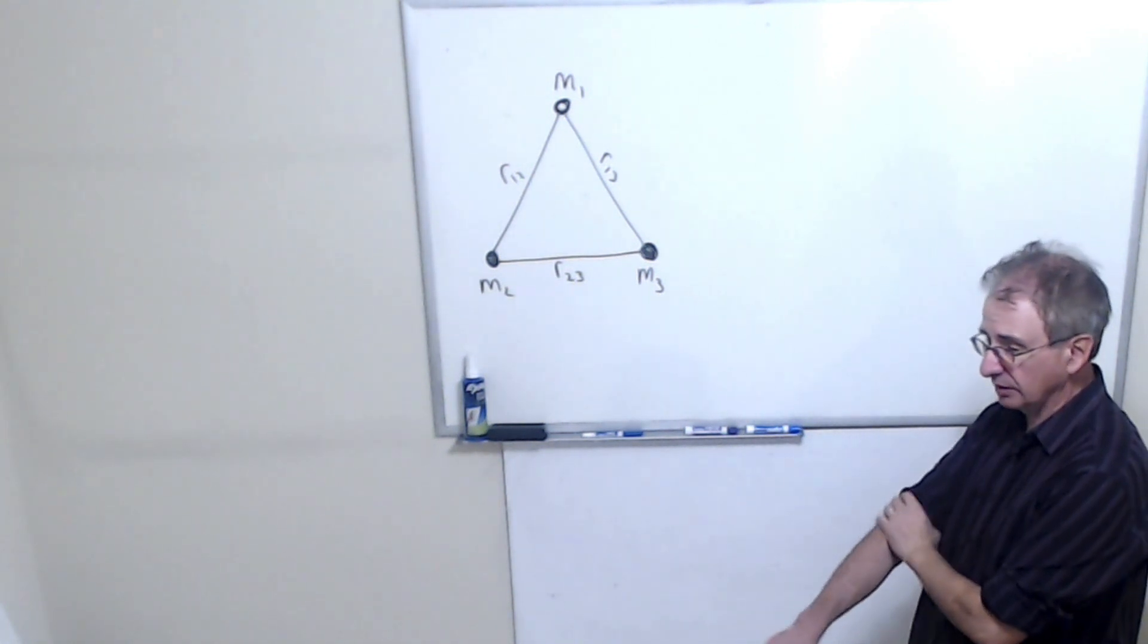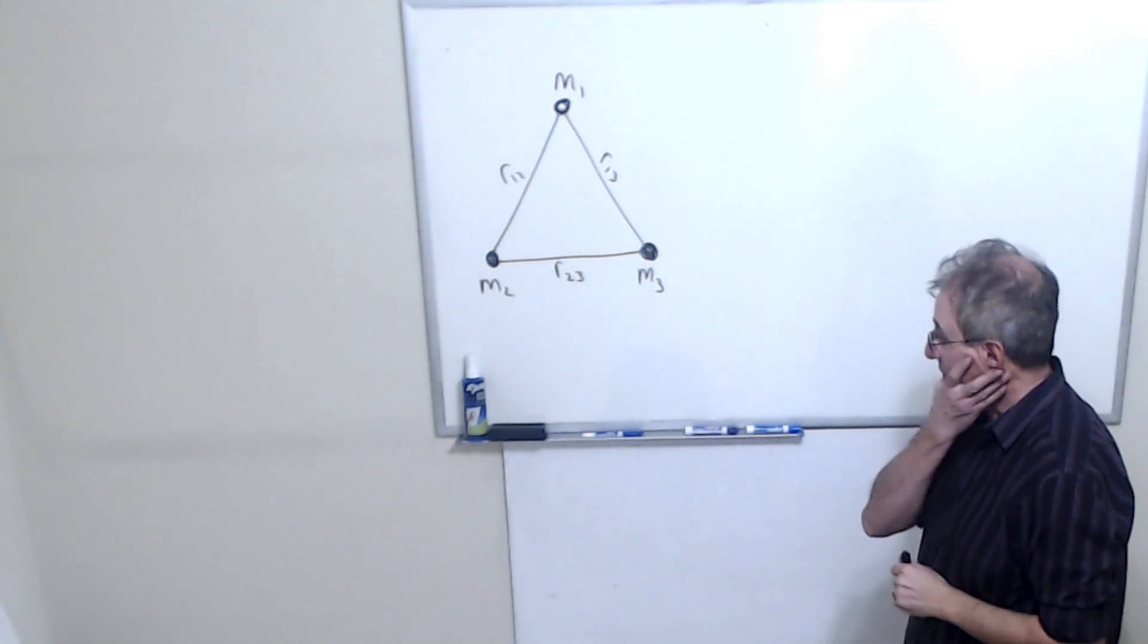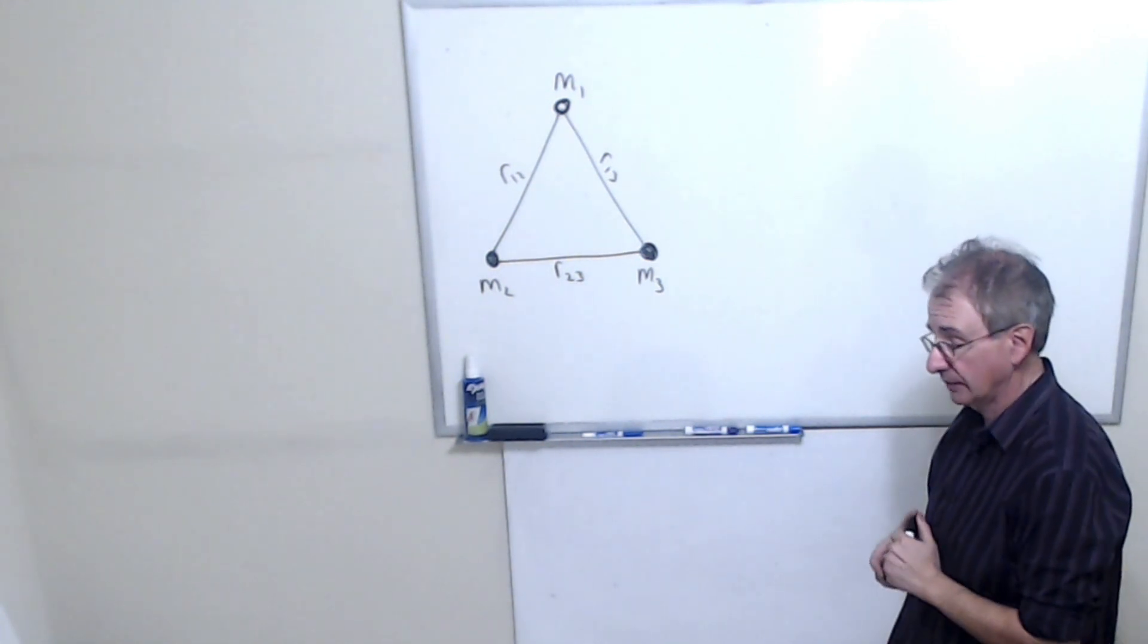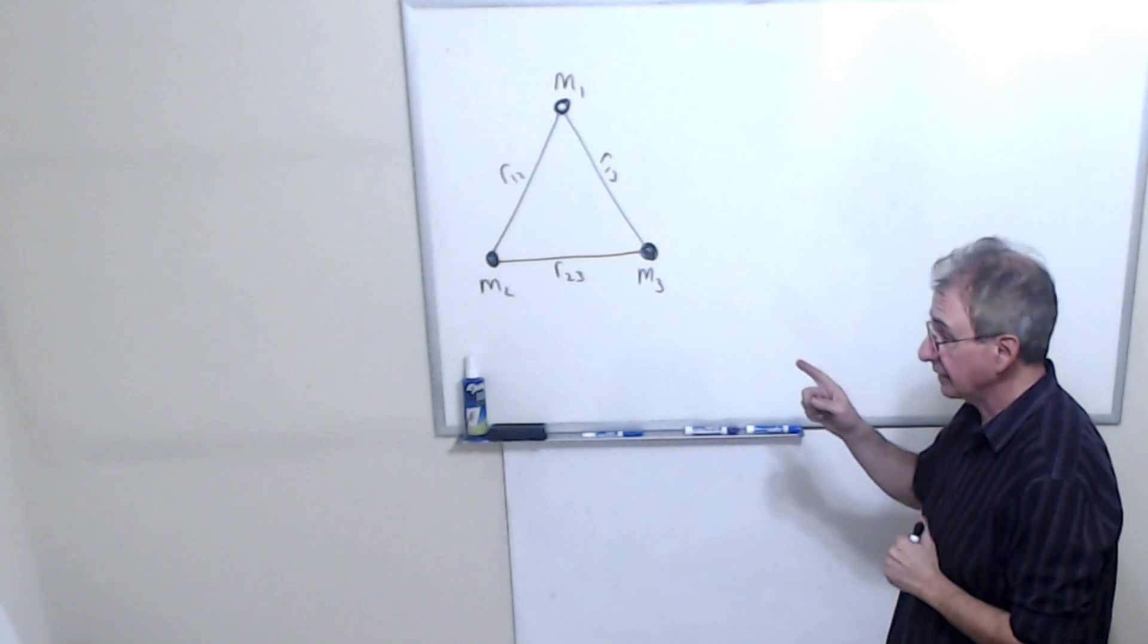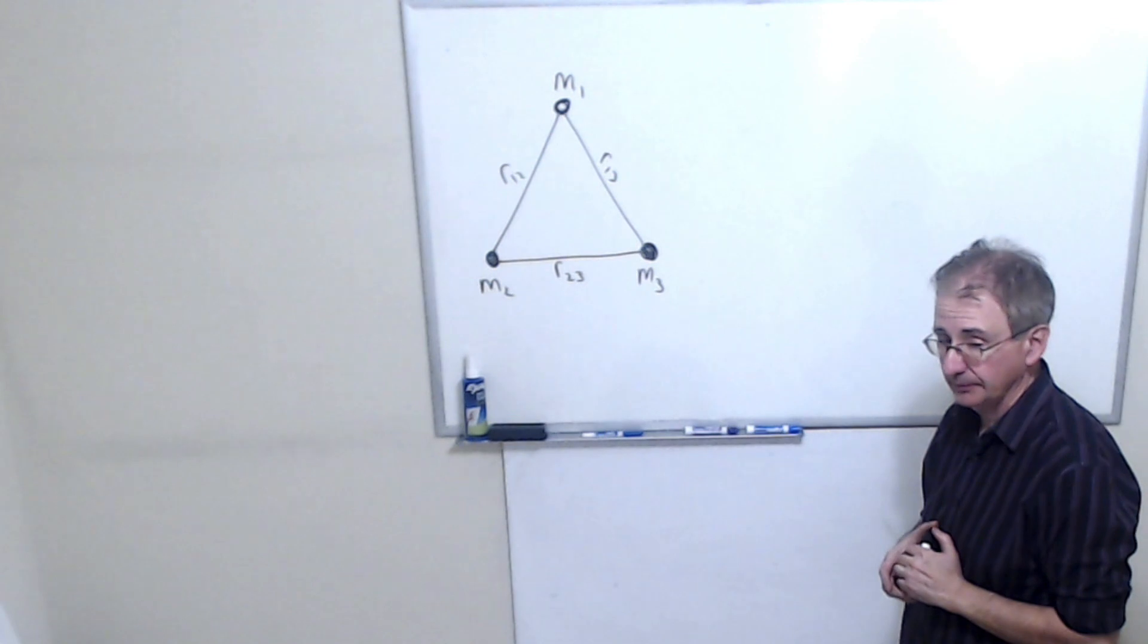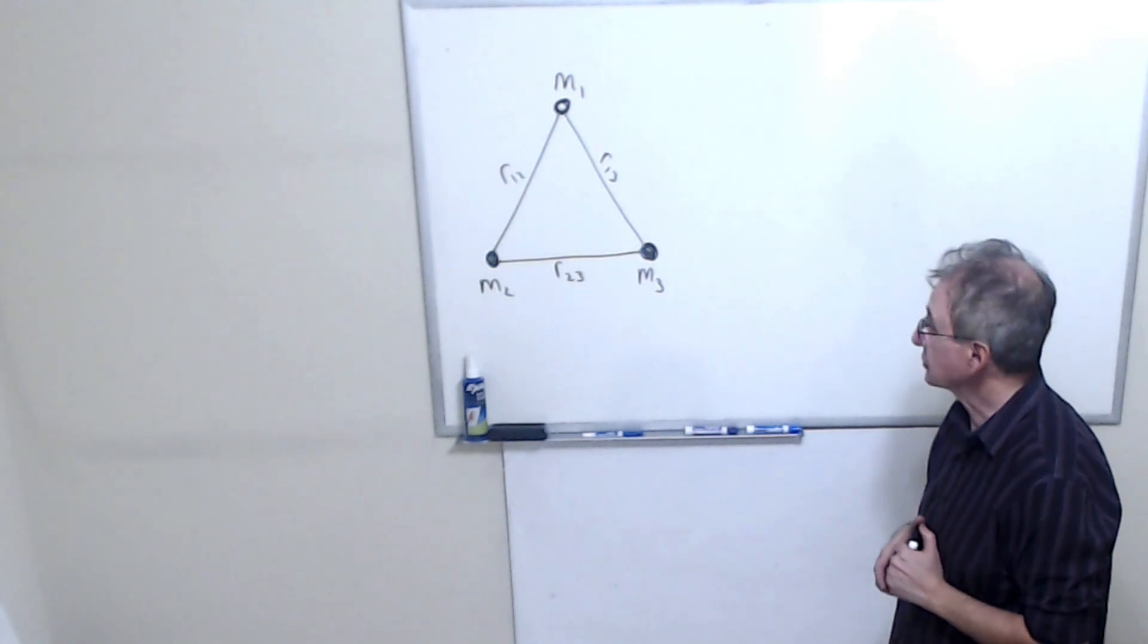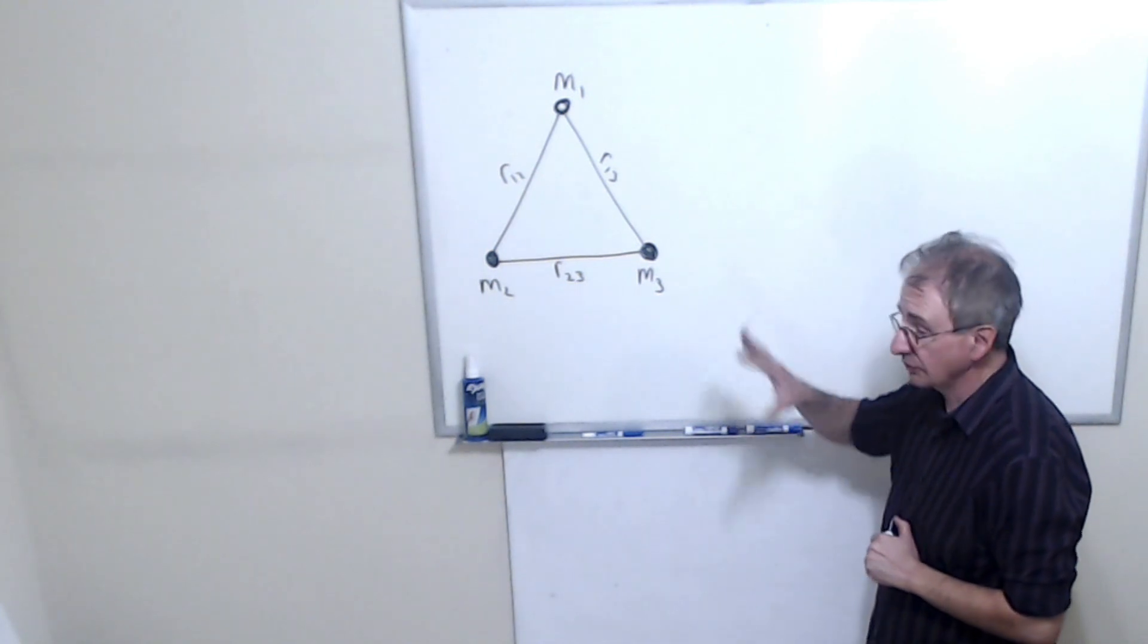I want to do an example of potential energy, gravitational potential energy. Suppose I have three masses. The question is, how much energy is stored in the system consisting of these three masses?